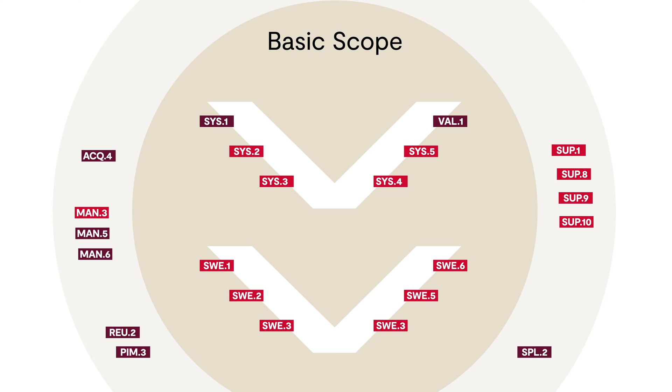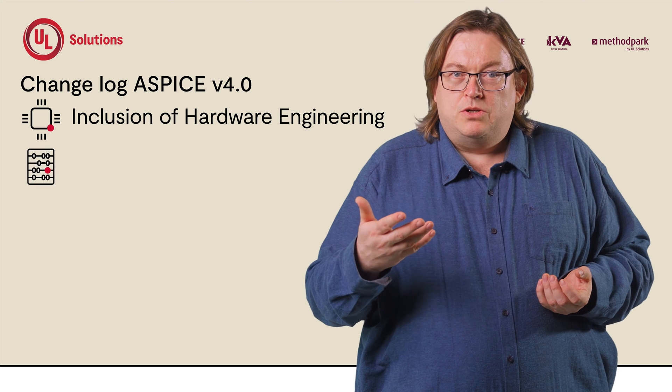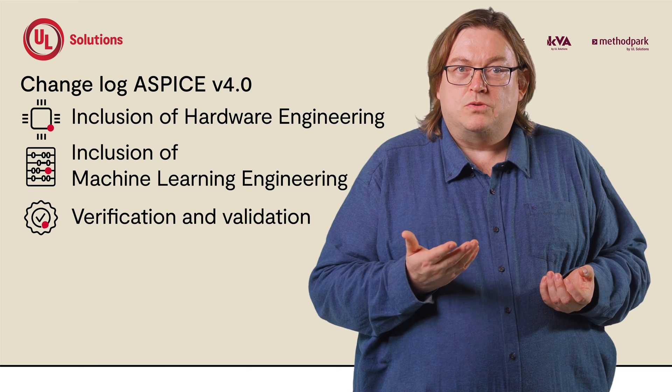The scope relevant for assessment has been streamlined to core processes. This scope is called basic scope. Of course, this does not mean that the rest of the processes are of no importance — the processes in the basic scope have dependencies on the rest of the processes. Based on the selected processes, the assessor has critical control points to get a comprehensive picture. With the inclusion of hardware engineering, machine learning engineering, and the overall evaluation, you know the new structure of Automotive SPICE 4.0. The basic scope defines which processes are intensively evaluated in an ASPICE assessment.